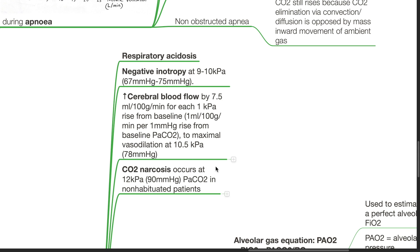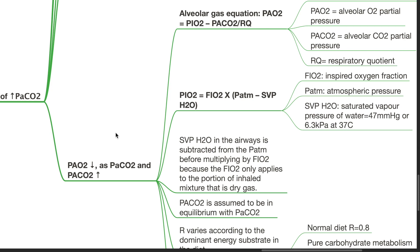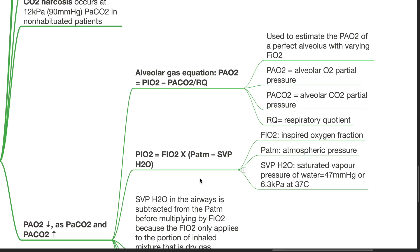CO2 narcosis occurs at 90 mmHg PaCO2 in non-habituated patients. PaO2 decreases as PaCO2 increases. The alveolar gas equation is: PAO2 = PiO2 − (PaCO2 / RQ). It is used to estimate the PAO2 of a perfect alveolus with varying FiO2. PAO2 is the alveolar oxygen partial pressure, PaCO2 is the alveolar CO2 partial pressure, and RQ stands for respiratory quotient.